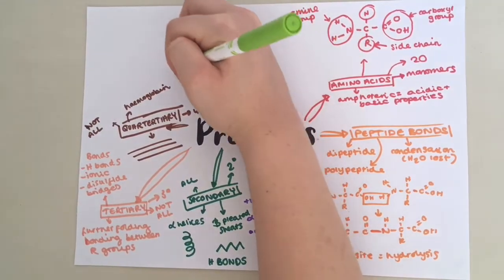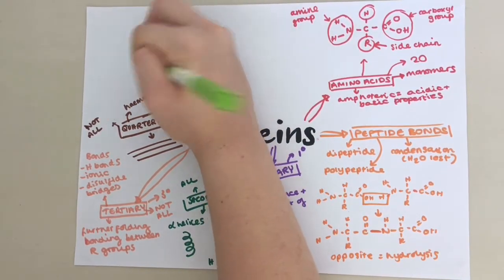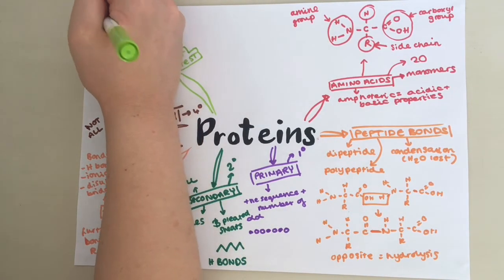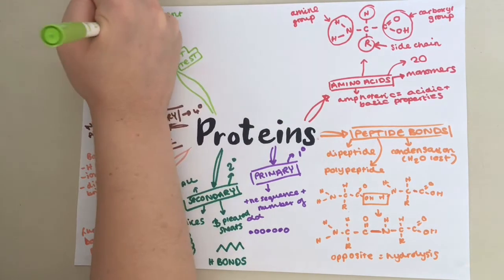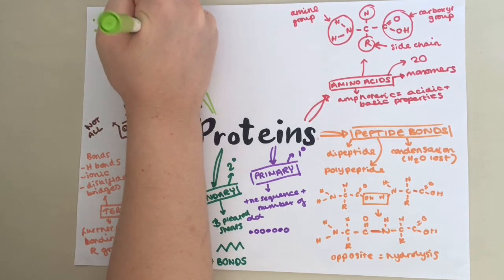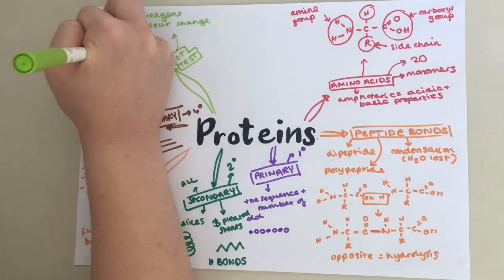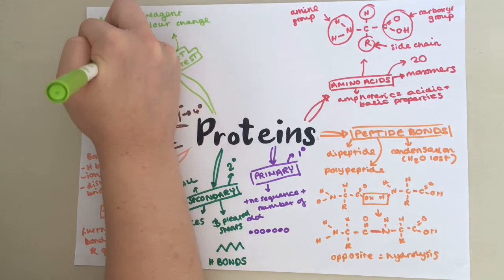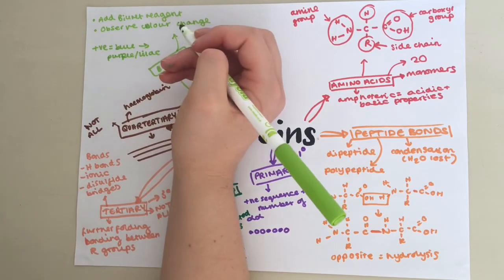The Biuret test can be used to test for proteins. What you need to do is you place your sample of the solution to be tested in a test tube and add an equal volume of Biuret reagent. Then you just need to observe the colour change. If protein is present, then the solution will change from blue to purple or lilac. The colours are quite pale though, so you need to look carefully.